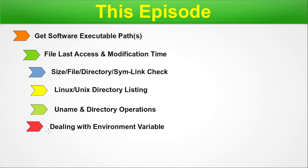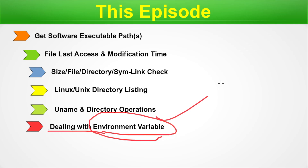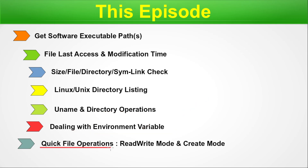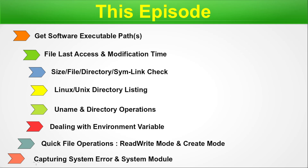We will talk about all these types of checkings — file, directory, symbolic link, etc. Next we will talk about the Linux or Unix directory listing: listing the files or folders in a specific path using Python. We will also do the uname operation and directory operations that we have already shown in the Linux series, through Python code. Next we will talk about dealing with environment variables.